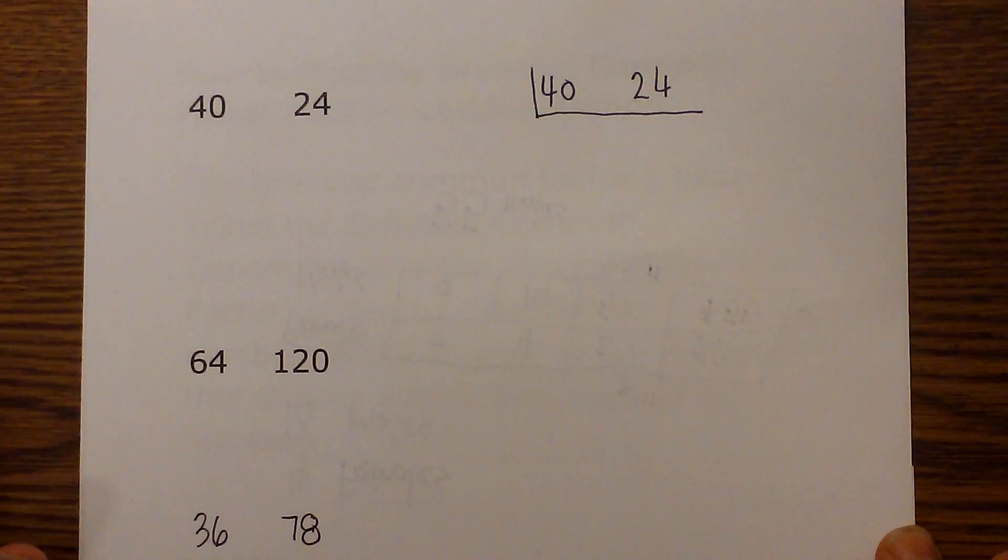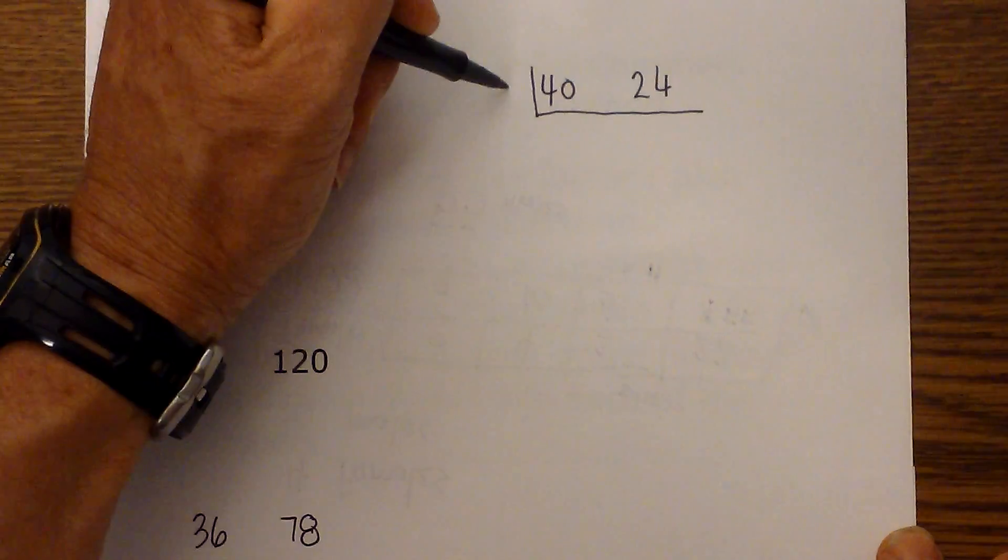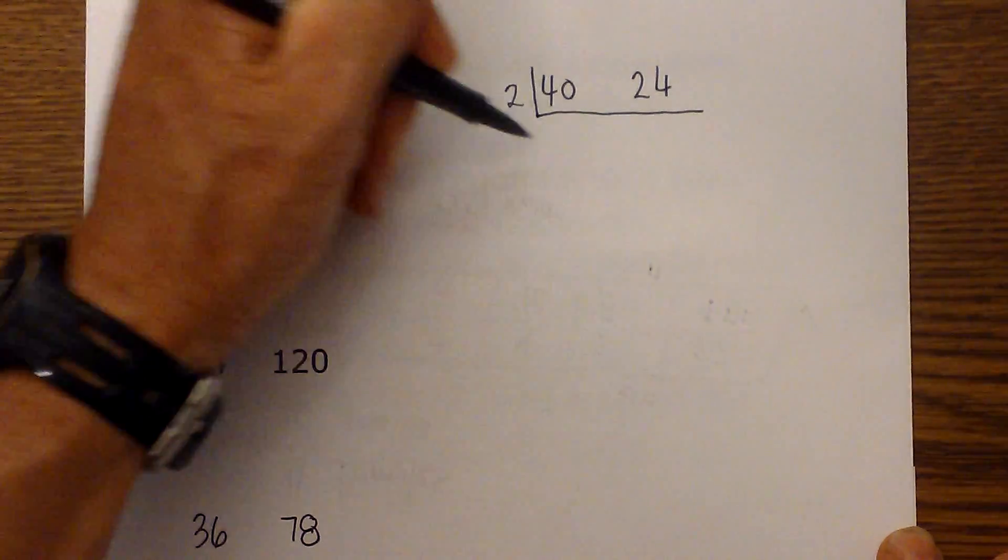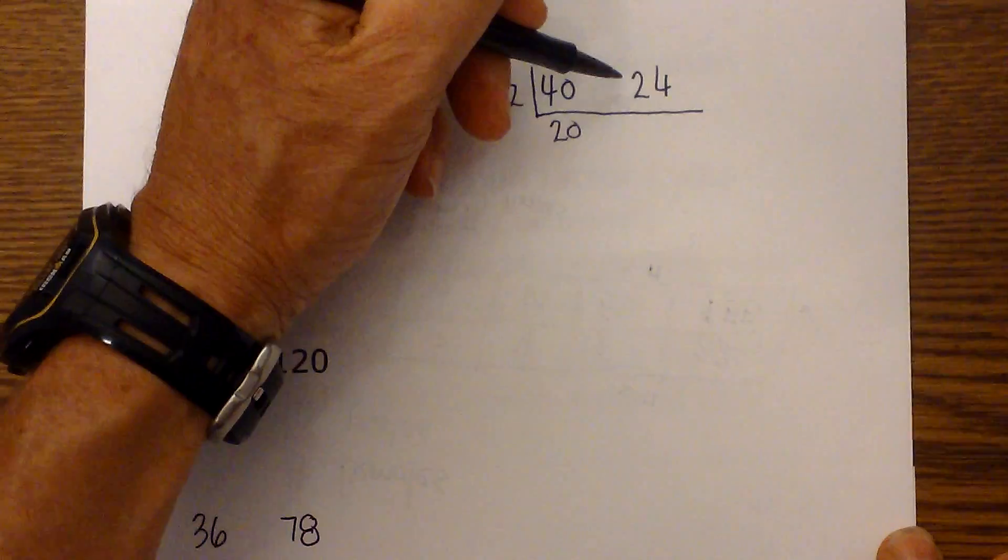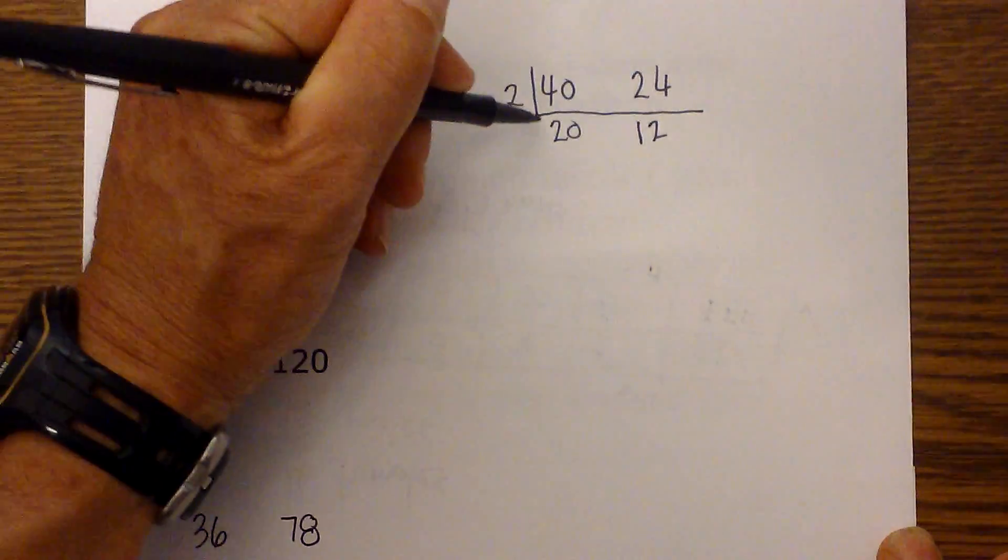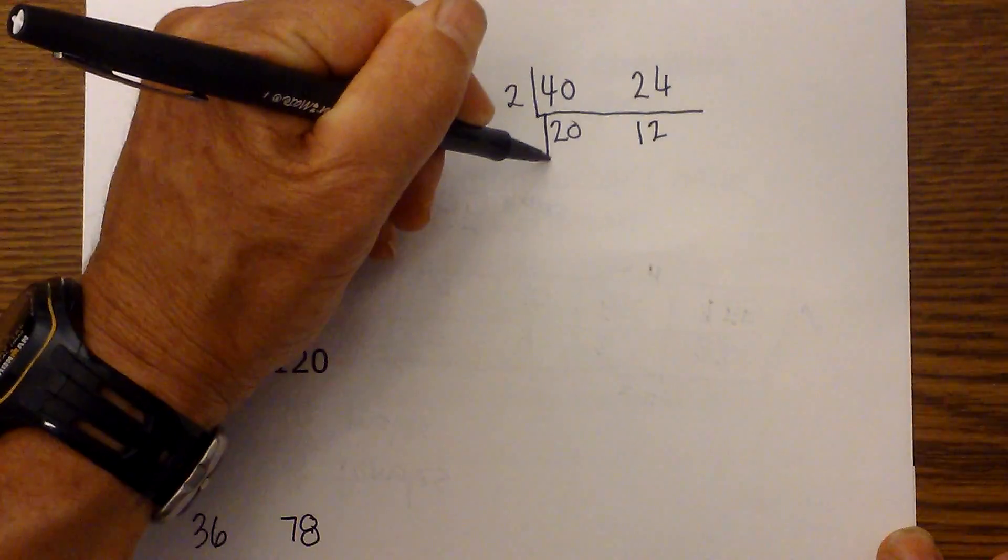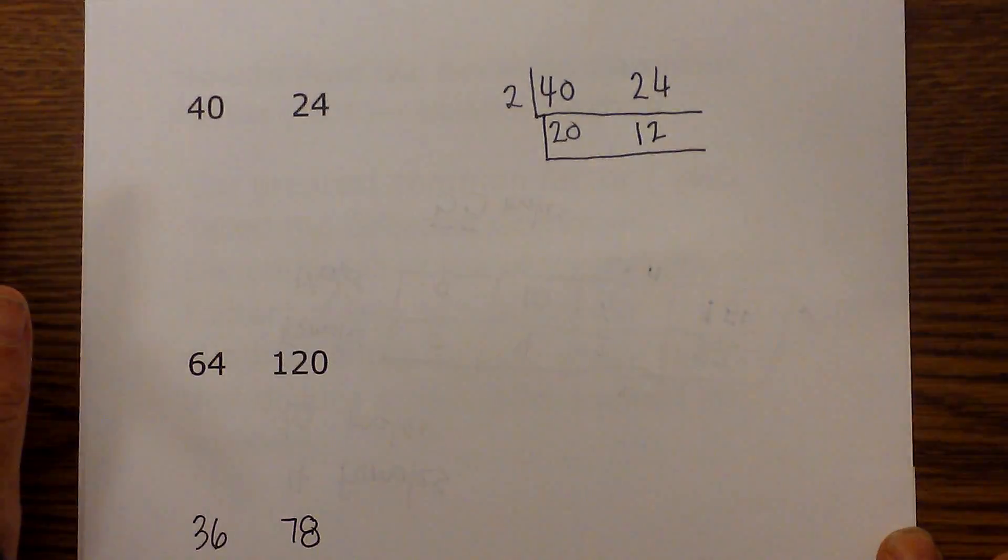But if worse comes to worse, you can just use two, it will work out properly. So in that case, I know that two goes into both of these. Two goes into 40 20 times and two goes into 24 12 times. I then draw a line underneath it like I did with the first numbers. And you can see it kind of looks like a ladder.